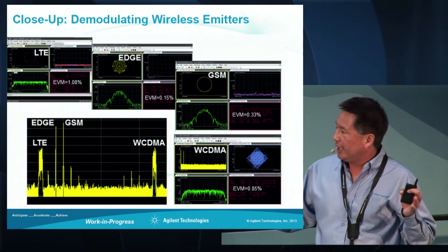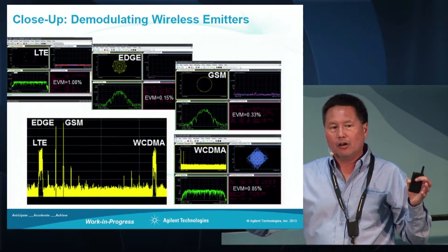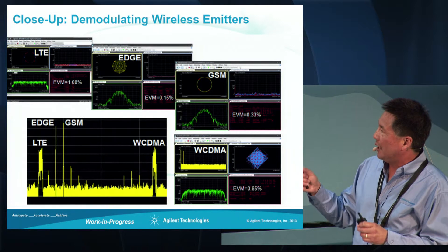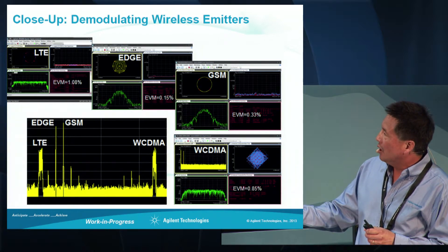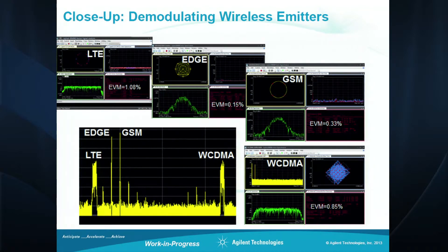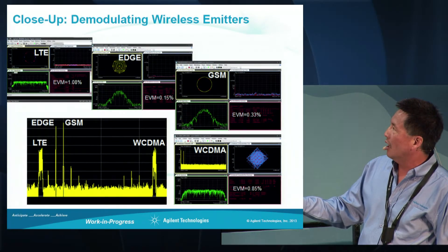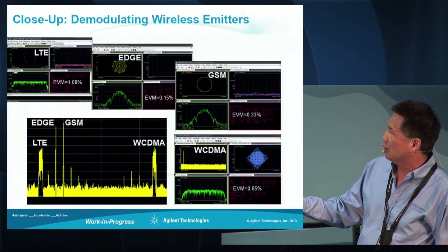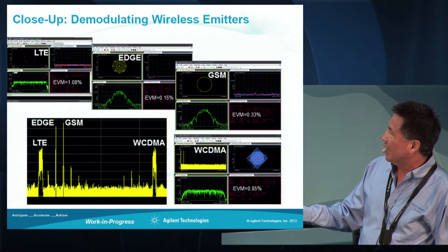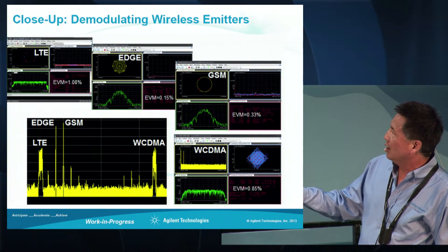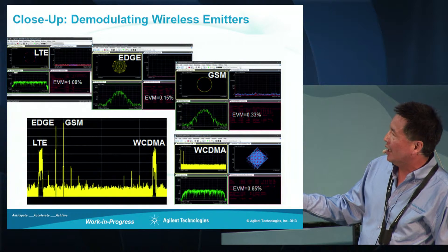Once we've generated this wideband spectrum with radar and comm emitters, we can use our PXA to zoom into each of the wireless emitters. We've tuned into the LTE emitter on the left and you can see we're demodulating it. We've annotated the error vector magnitude for the demodulation results. Likewise, for the EDGE emitter, we're showing the demodulation results with the EVM being measured.